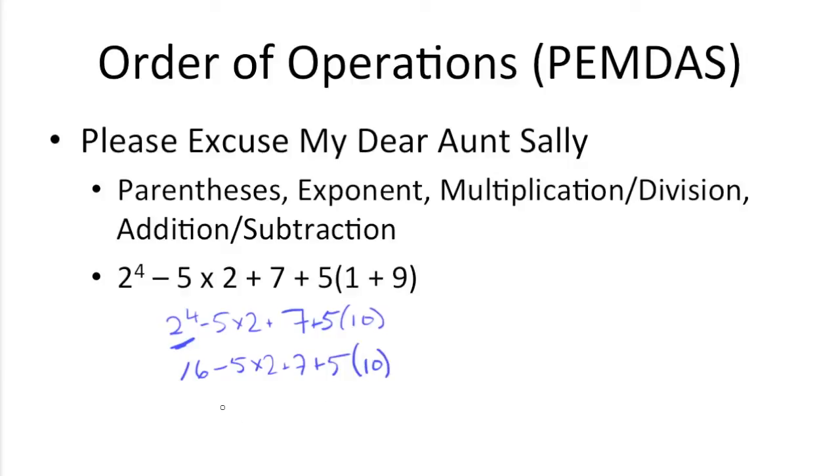Now the next step would be multiplication and division. So we have negative 5 times 2, which gets us negative 10, and we have 5 times 10 here, which gets us 50.